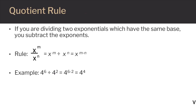Now let's take a look at the quotient rule. We use the quotient rule when we're dividing exponents that have the same base. It's very similar to the product rule, but when you divide exponents, you subtract them. The rule says if you have a base raised to the m power and divide it by an expression with the same base raised to the n power, then subtract n from m for a new exponent. For example, four to the sixth power divided by four to the second power — the bases are the same, so we subtract the exponents. We get four to the sixth minus two power, which equals four to the fourth power.